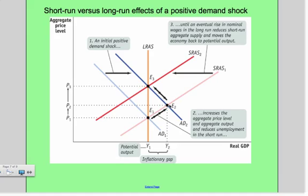Eventually, we're going to get a rise in nominal wages in the long run, which is going to reduce short-run aggregate supply because it'll be harder for producers to produce goods. And it's going to move the economy back to potential output along the long-run aggregate supply curve. I skipped a step here. We talked about an initial positive demand shock, increases in aggregate price level and aggregate output, and reductions in unemployment.